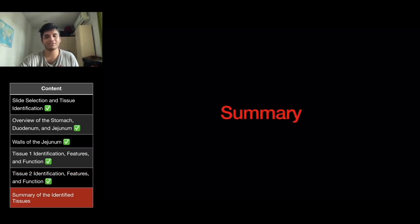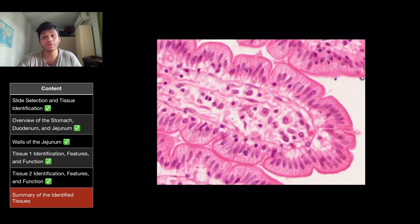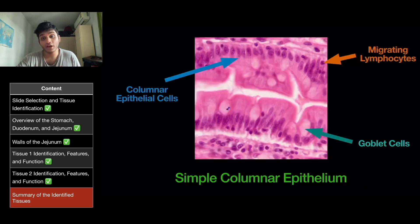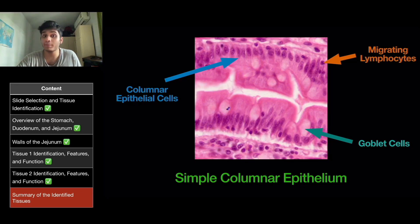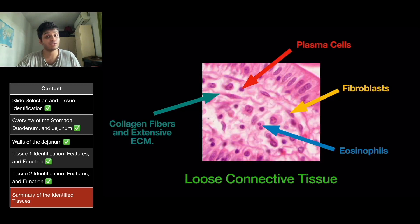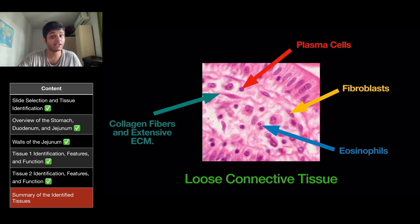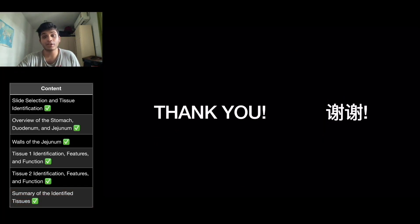To summarize, we looked at the mucosa of the jejunum and identified tissue one as simple columnar epithelium due to the presence of columnar epithelial cells, goblet cells, and migrating lymphocytes. Tissue two was identified as loose connective tissue because of the plasma cells, fibroblasts, eosinophils, collagen fibers, and the extensive presence of extracellular matrix. Thank you for listening to my presentation. Have a great day.